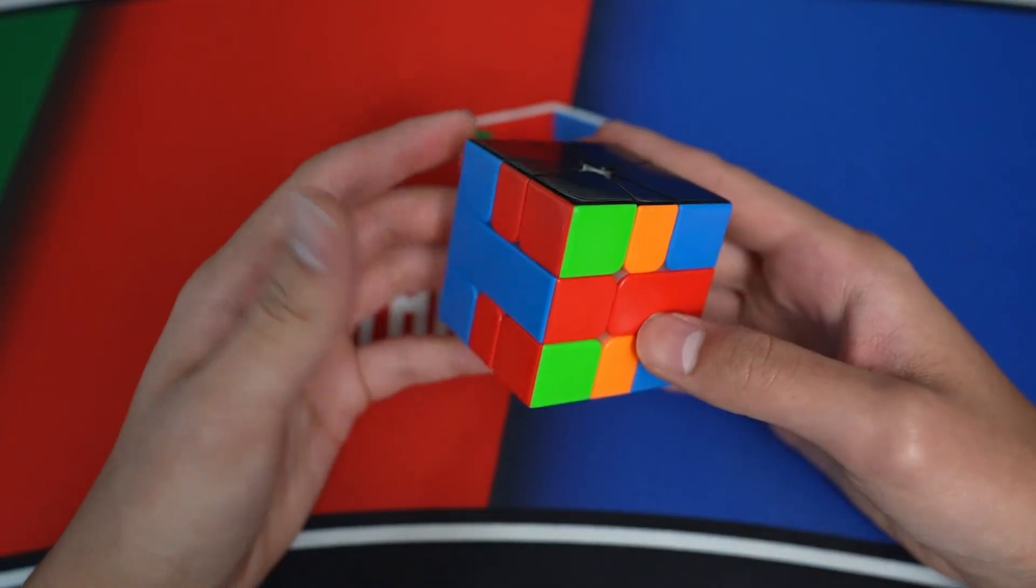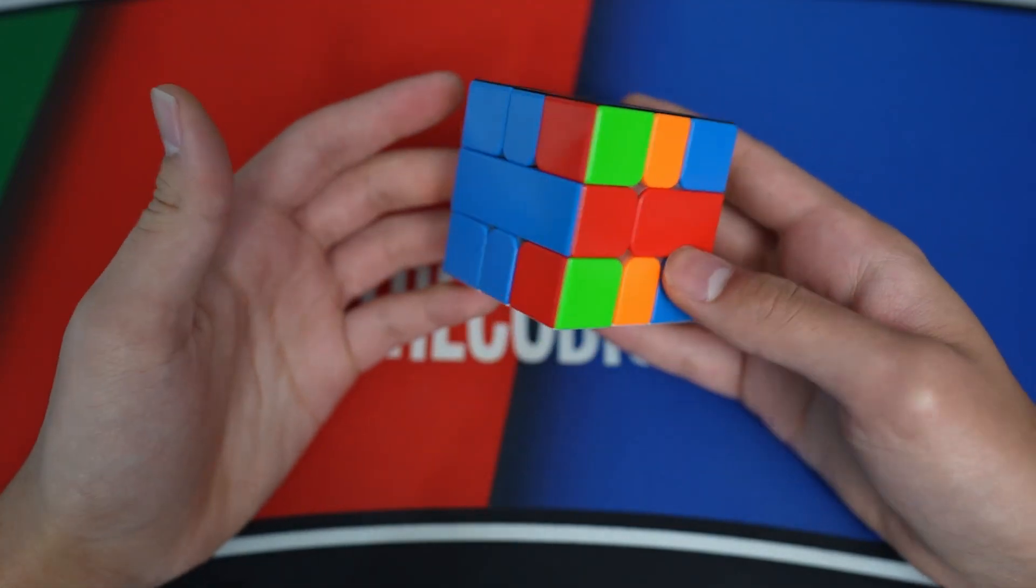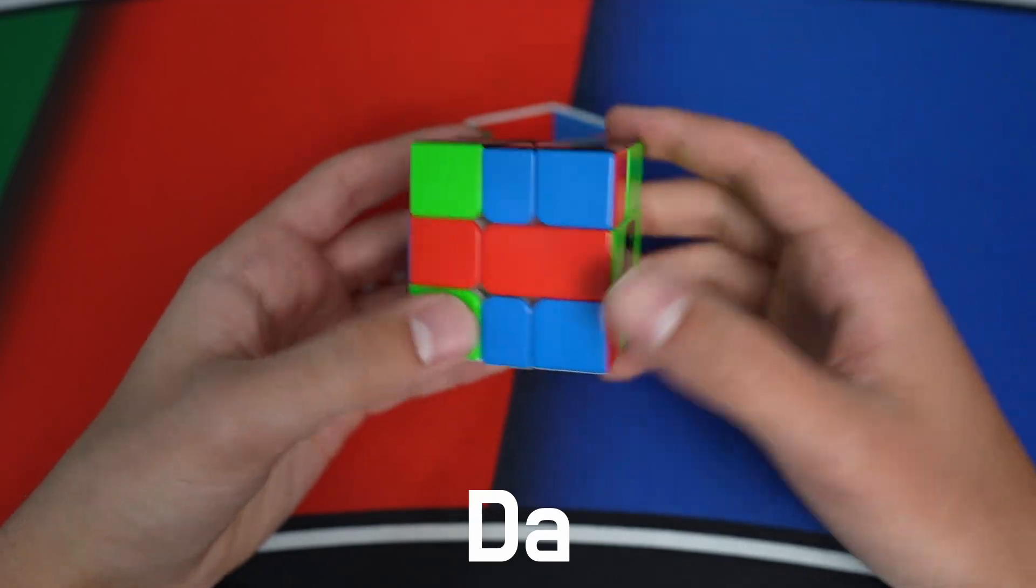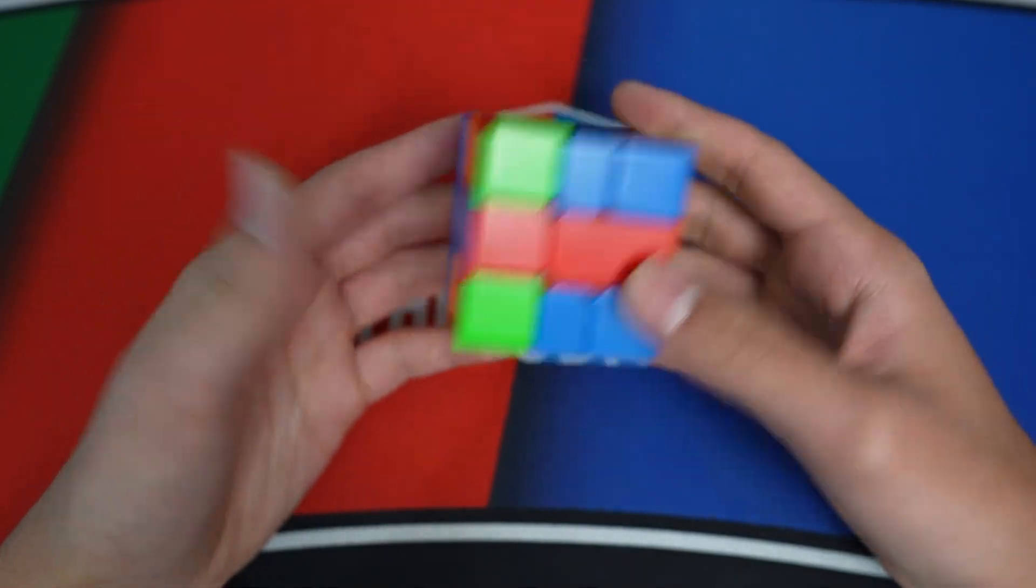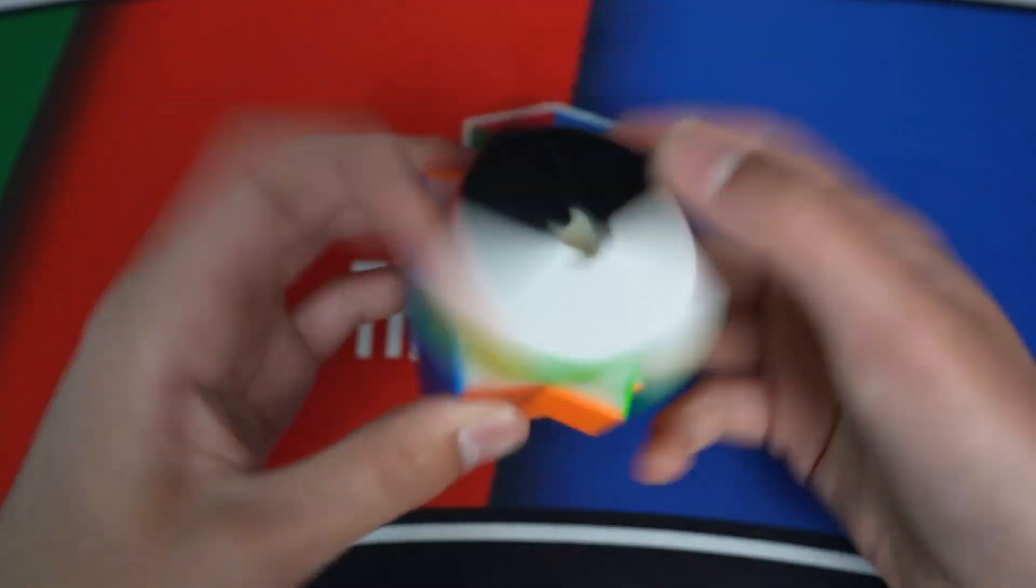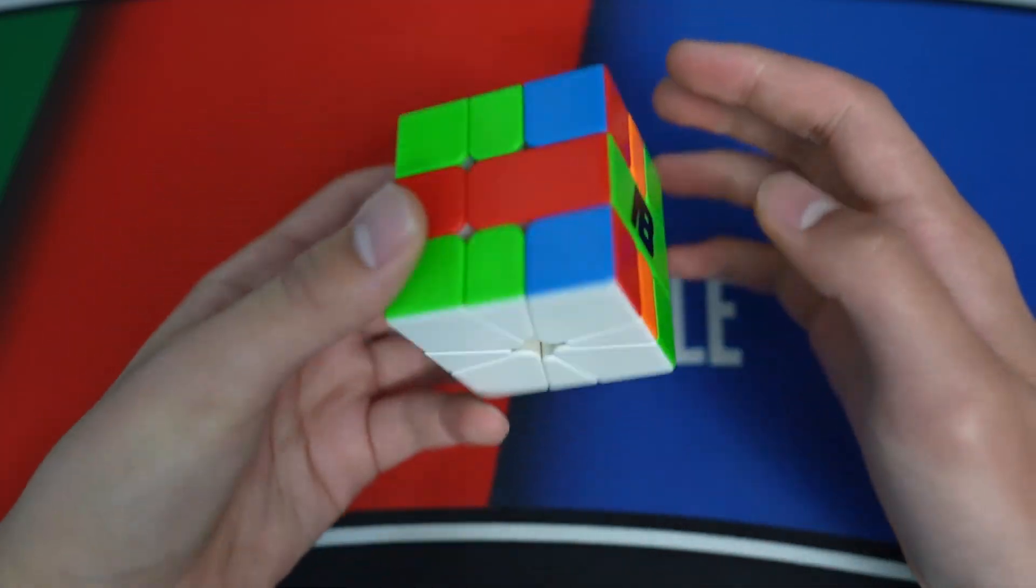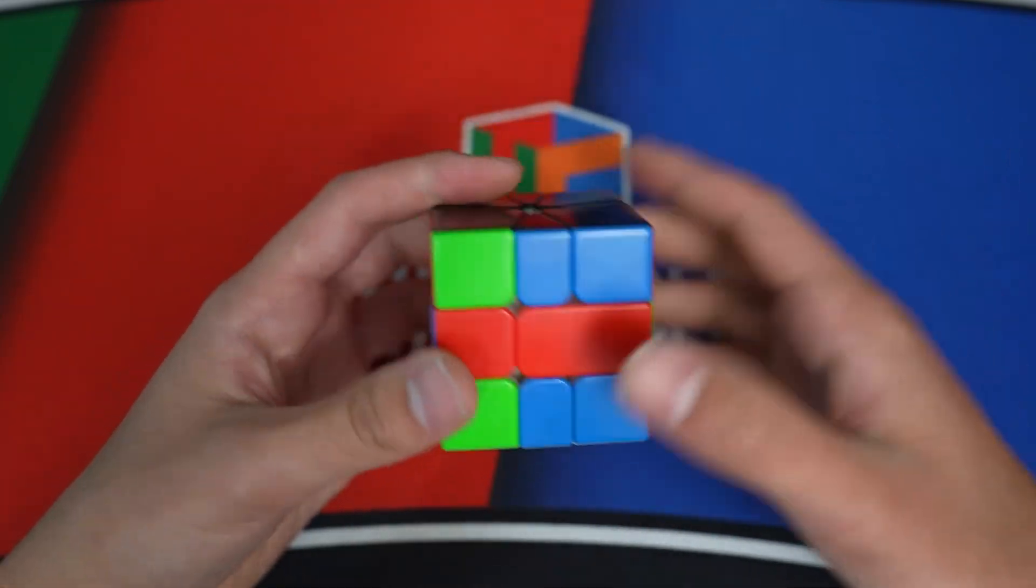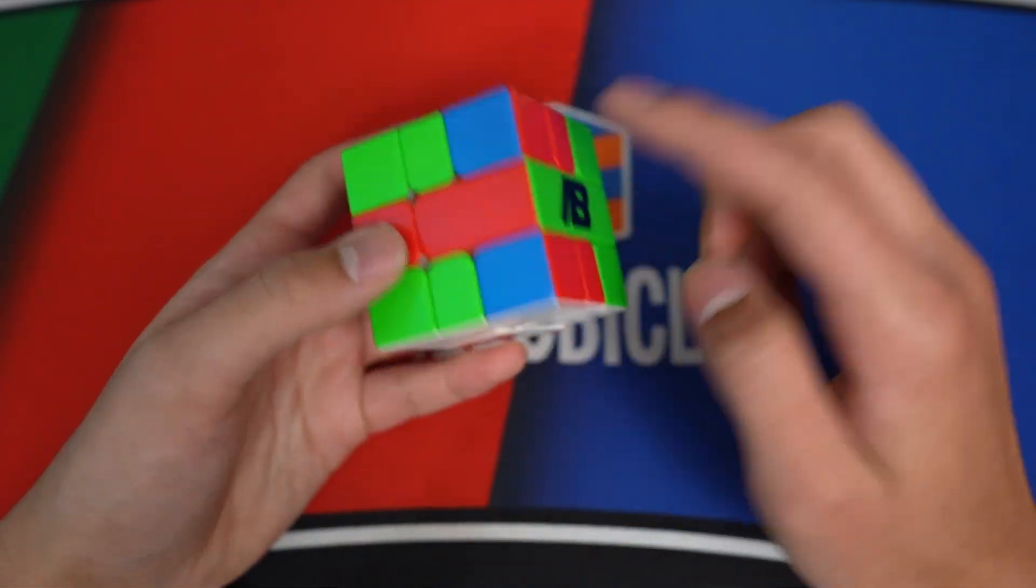Next up are B perms. So this is BA for aligned. This is BM, because in order to preserve the blocks, you have to misalign. D perms are very similar. This is DA, because you have to align the layers to preserve the blocks. And of course, this is DM, because you have to misalign, like this. K perms are the exact same. This is KA. Here's KM, because the blocks are misaligned.